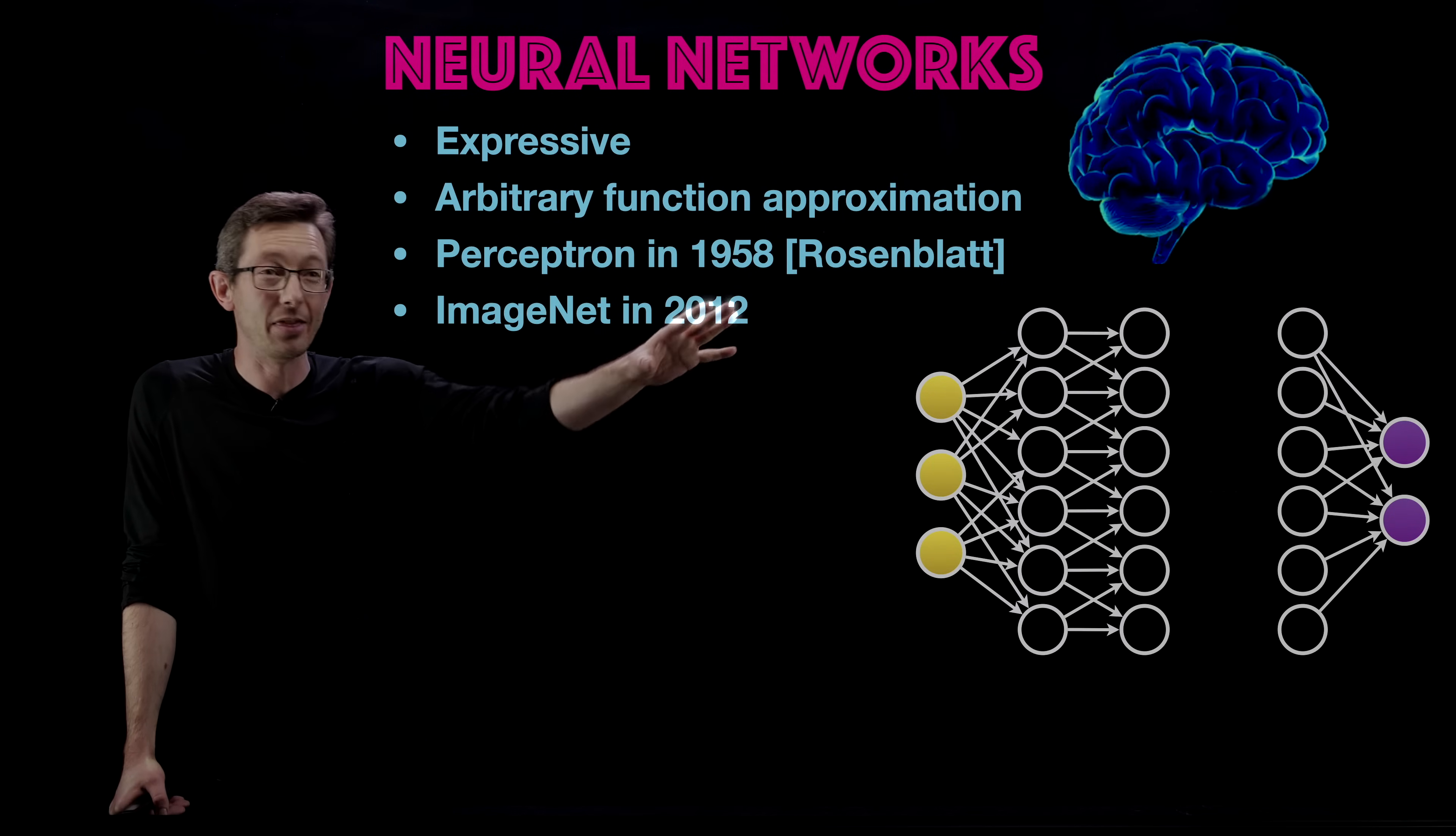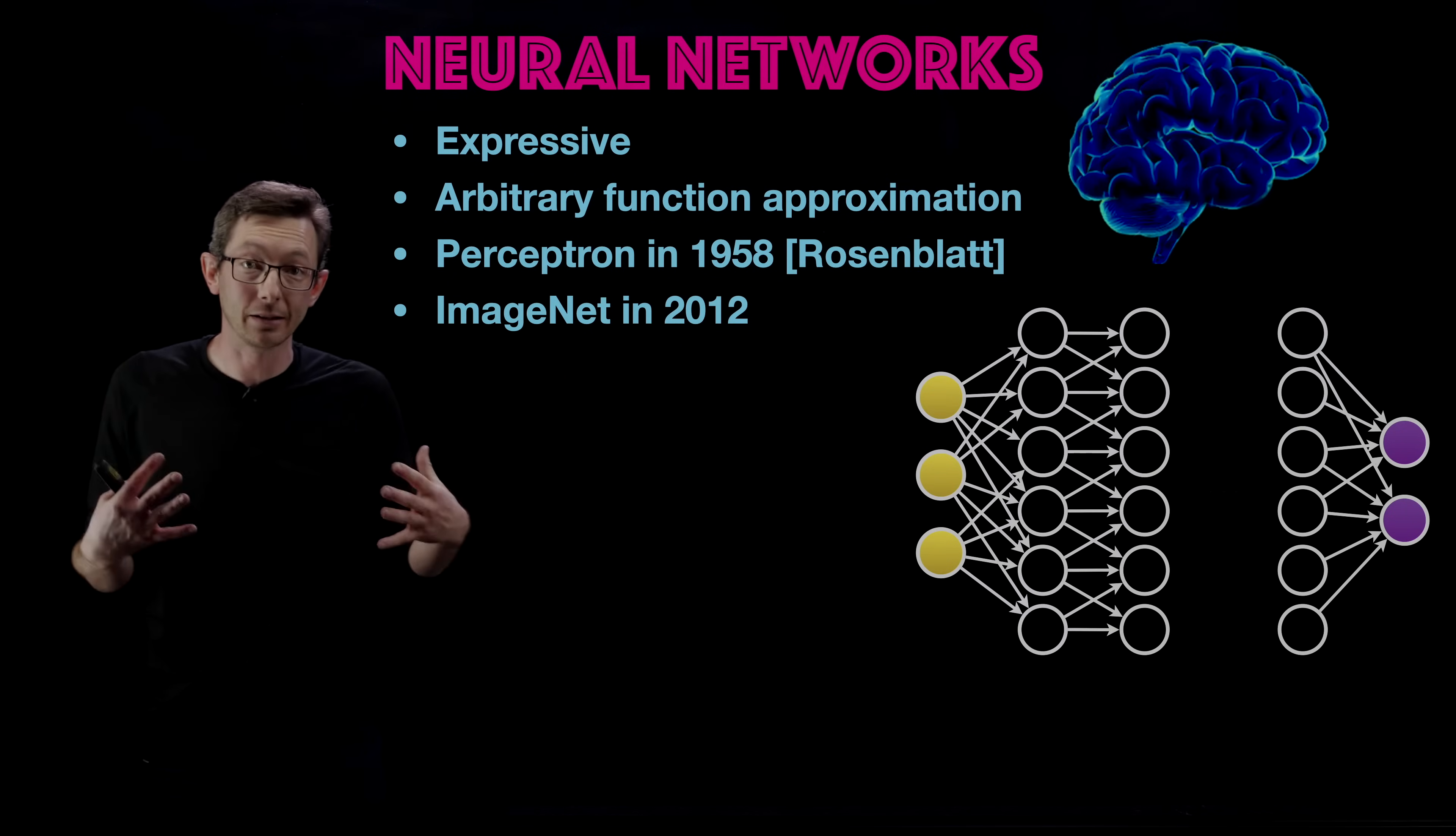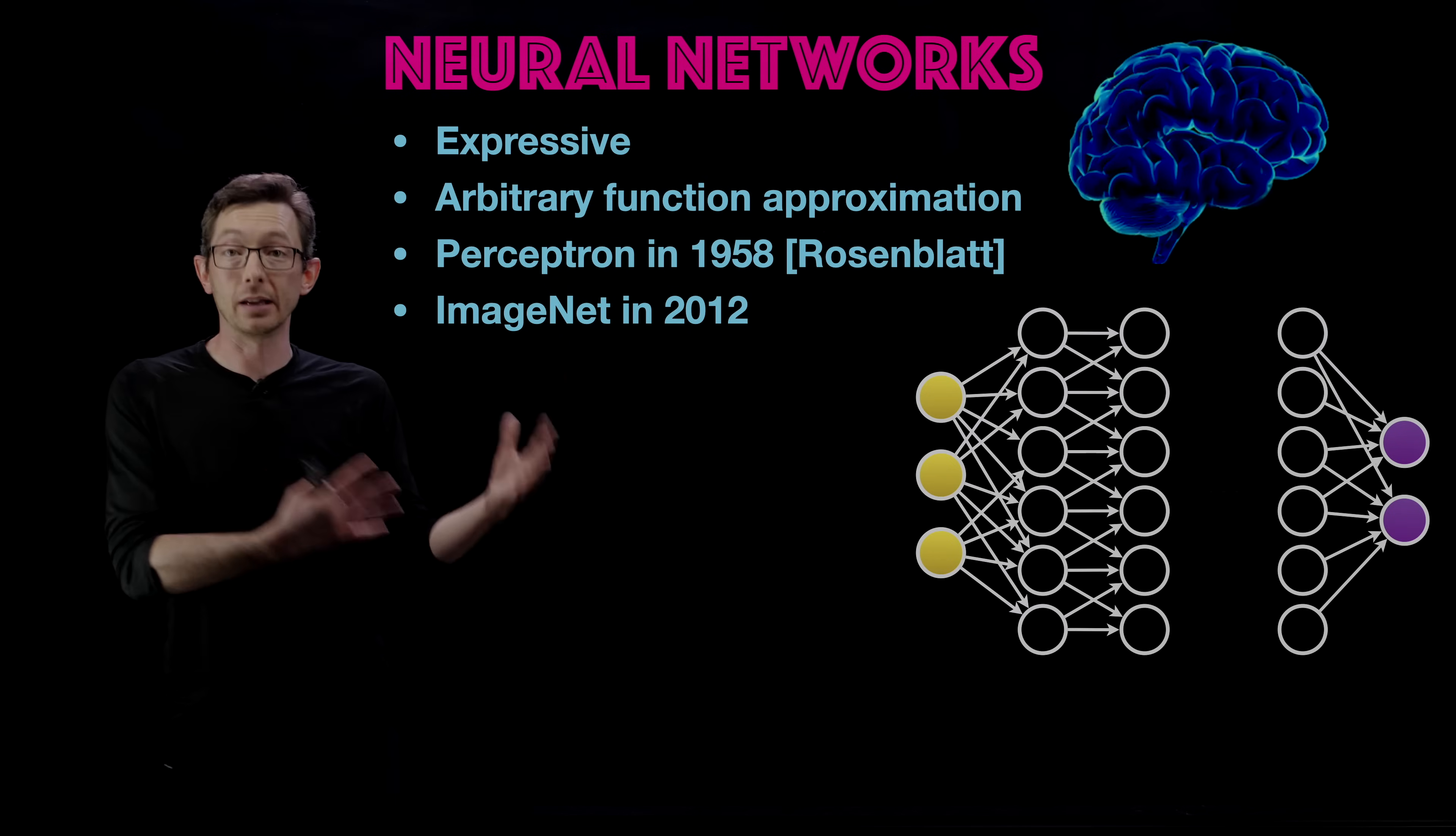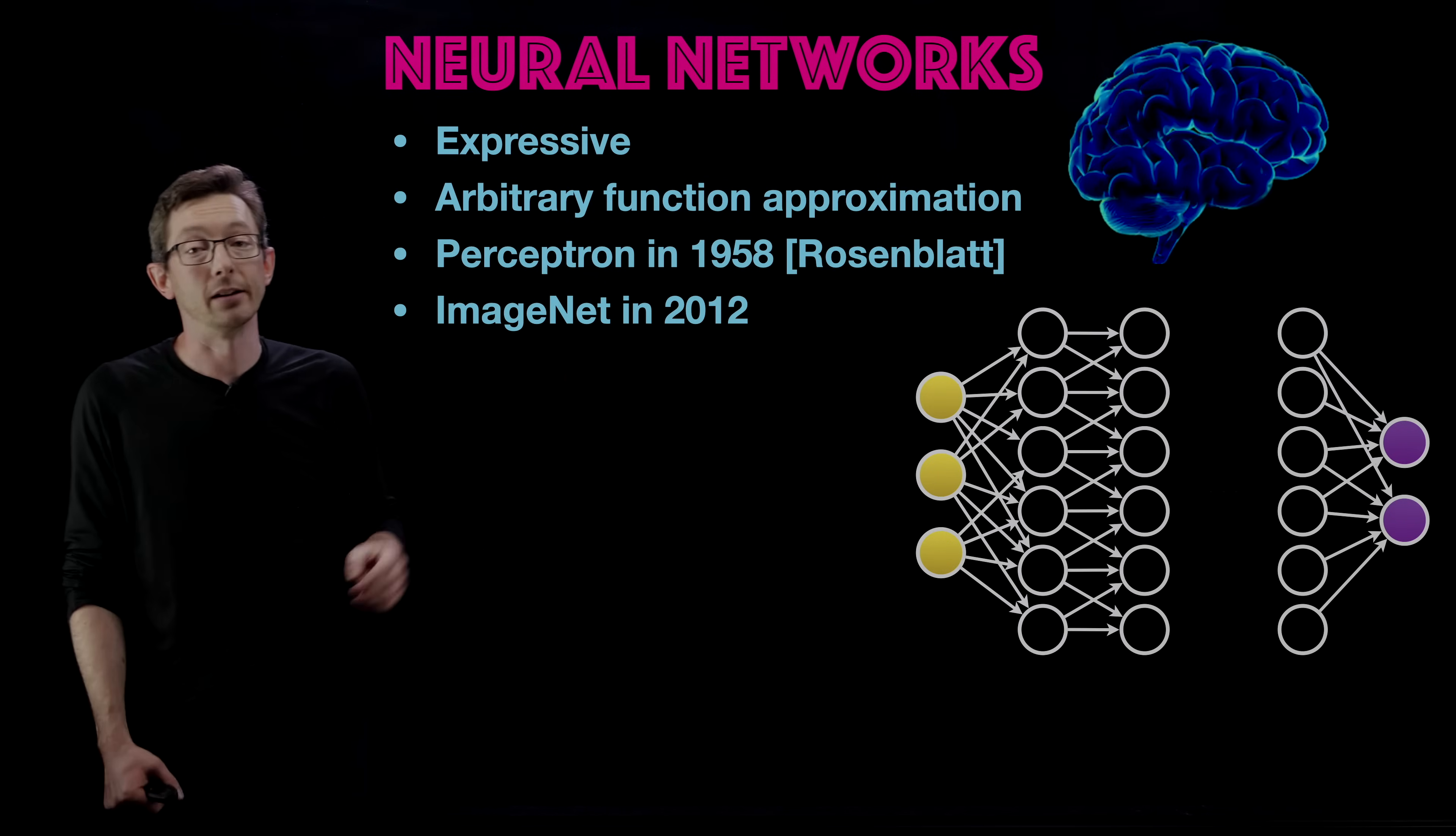This 2012 powerful demonstration that kind of revived neural networks was based on a massive labeled data set that allowed this to be trained. So the data is equally important. But with enough data, these are very, very expressive and powerful function approximators. So good candidates for machine learning.